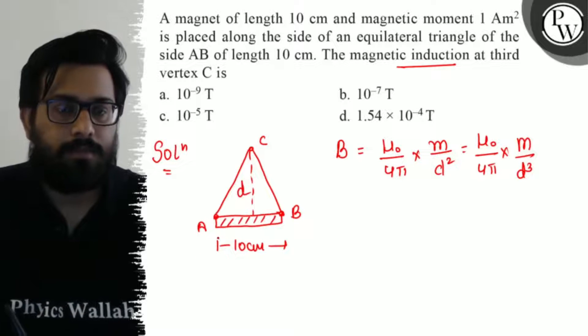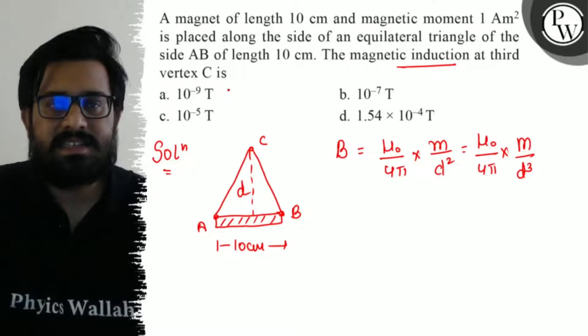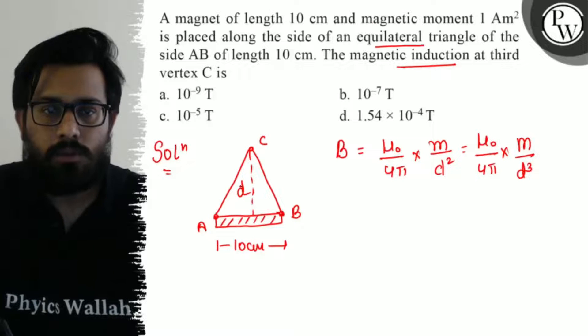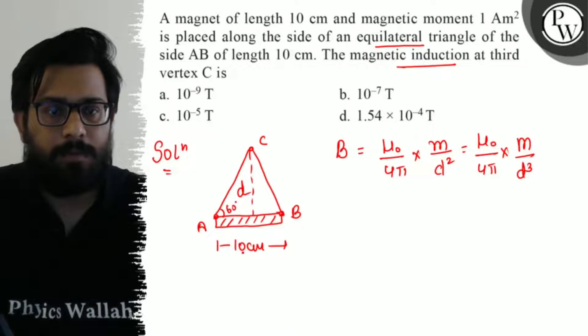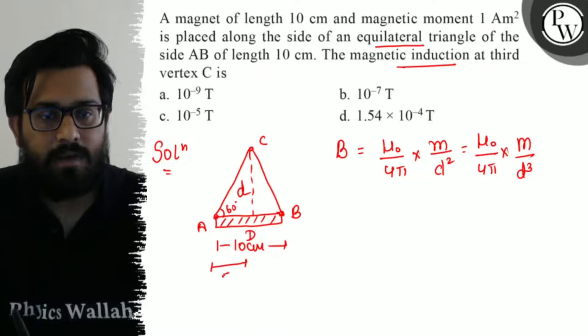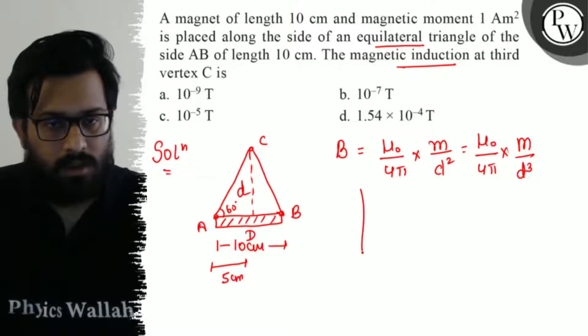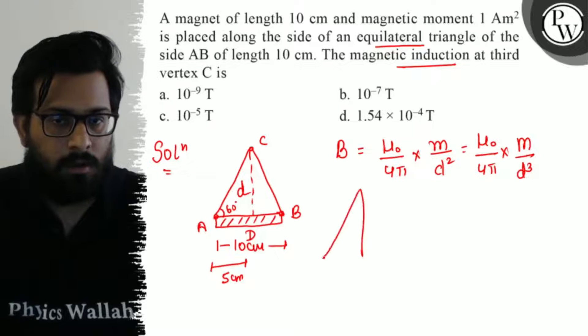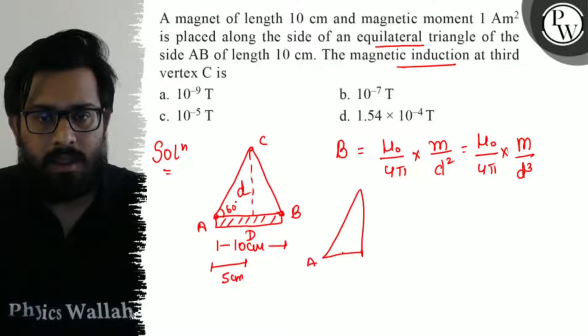Now this is the value of D. Now how we calculate D? Since this is an equilateral triangle, so the angle here is 60 degrees. And here from the middle I make a point D and AD comes out to be 5 centimeter. So I consider triangle ADC. And I have to calculate the value of small d here.